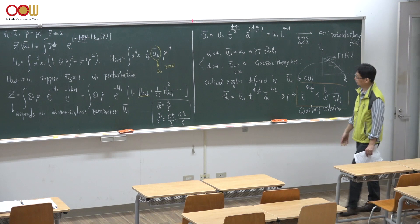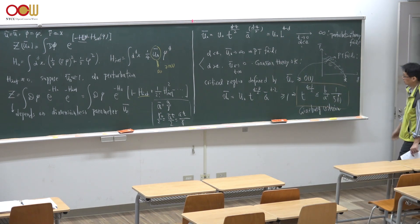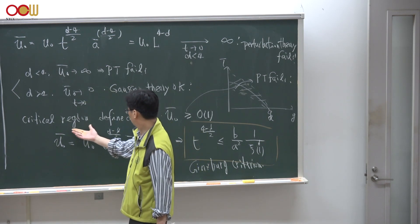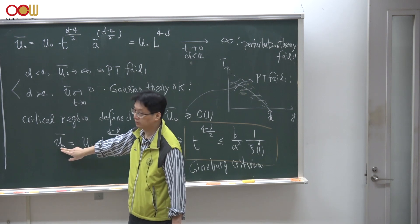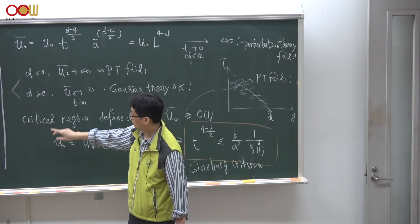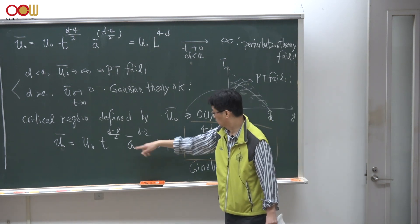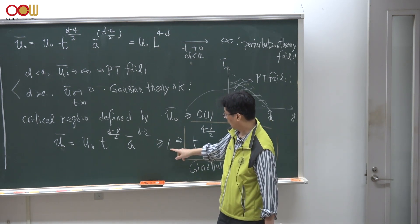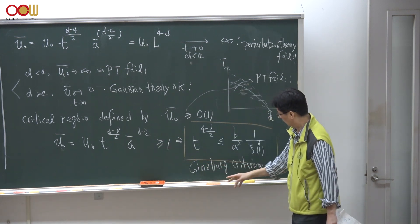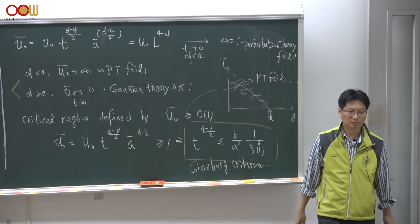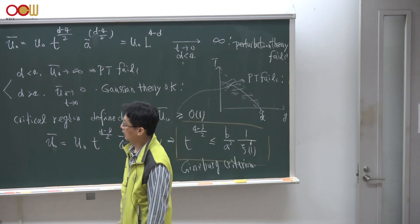If the dimension is above 4, then everything is fine and the Gaussian theory is okay. Inside the critical regime, the perturbation theory fails, which means this dimensionless coupling constant should be greater than or equal to order one. Writing down this condition and rearranging the inequality, this inequality is the same as the Ginzburg criterion we found earlier. This is just a consistency check, and a message to us that inside the critical regime, something needs to be done.